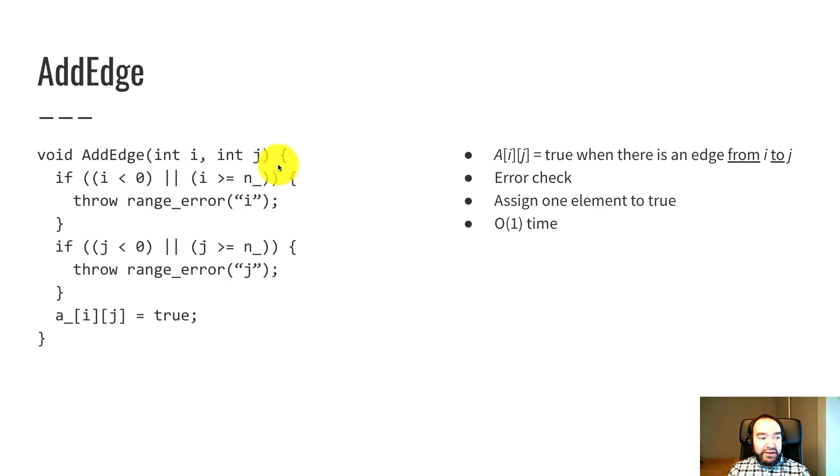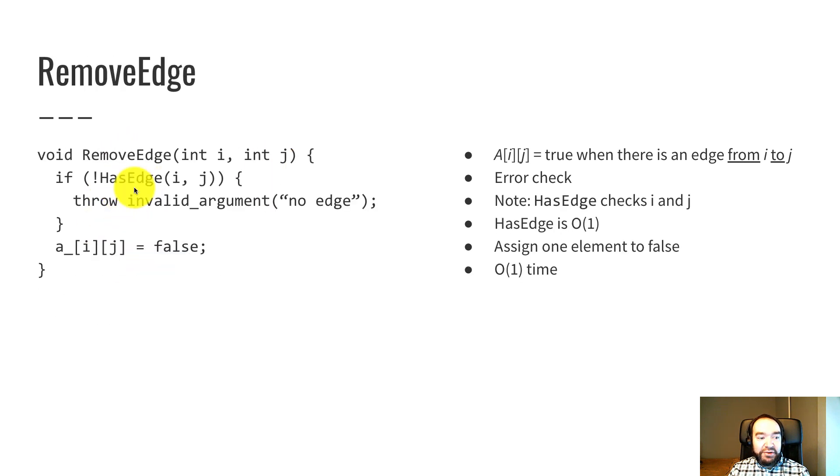So when I call has edge, if i or j are illegal indices, the first thing has edge does is throw an exception on illegal indices. So I don't need to repeat that work. And if I get past the if statement, we know that i and j are legal and that there is an edge from i to j. So I set a[i][j] to false. That erases the edge out. So this is constant time.